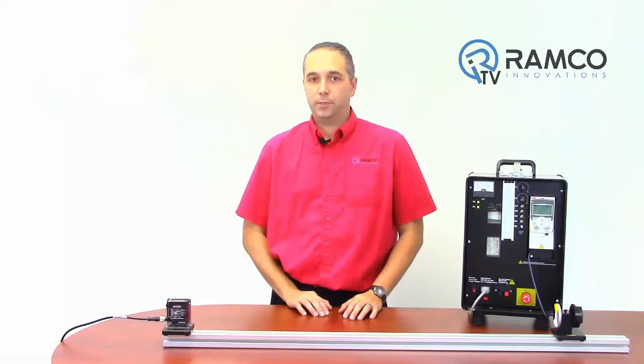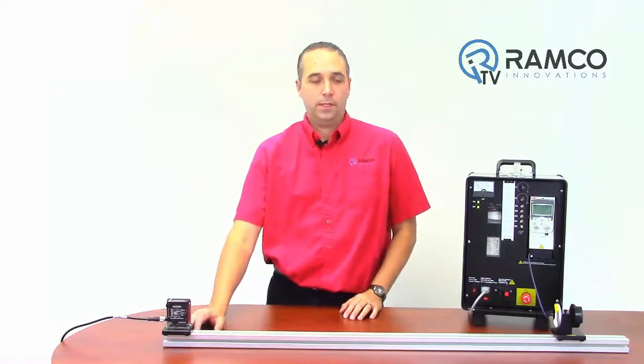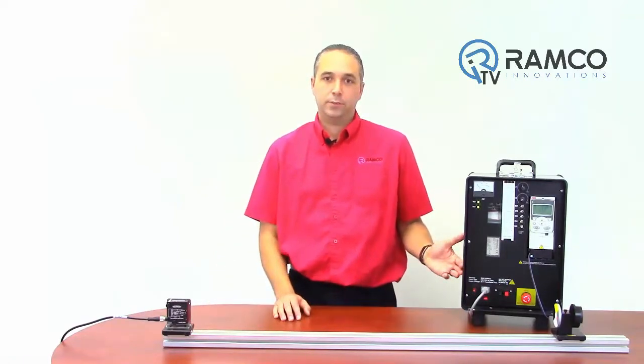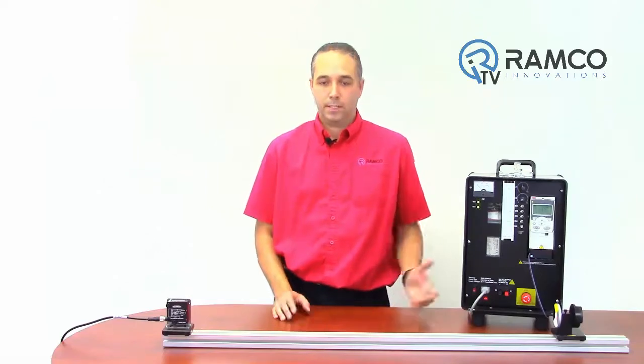For this demonstration we'll be using the LE550 laser measurement sensor from Banner. The sensor has a 4 to 20 milliamp output. The ACS355 has two scalable analog inputs capable of reading negative 20 to plus 20 milliamps or negative 10 to plus 10 volts. Let's get them to work together.